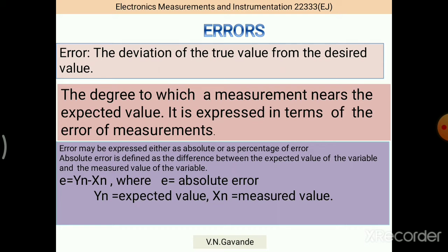Now the important thing related to errors is the definition of error. The deviation of the true value from the desired value. The deviation means the difference, that is, the difference between true value and expected value. Another definition: the degree to which an instrument measurement nears the expected value. It is expressed in terms of the error of measurements.